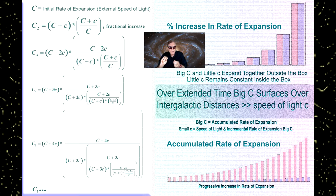So each incremental increase of big C results in an additional proportional increase by the ratio of C plus c over C, or the prior value of big C.